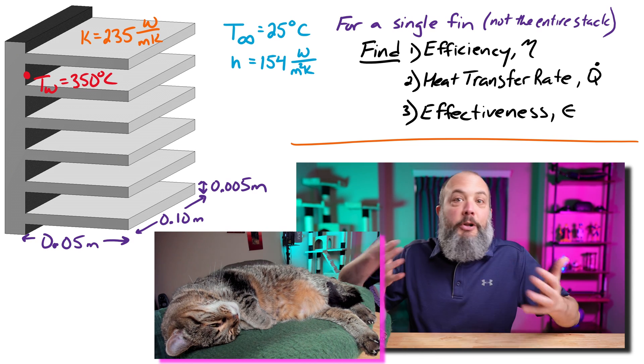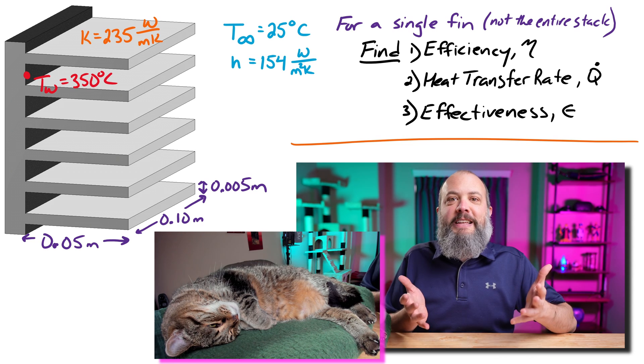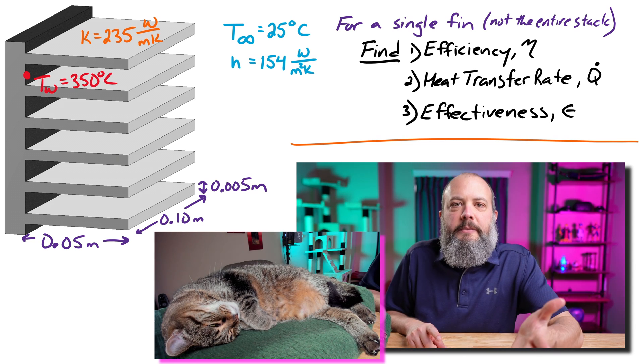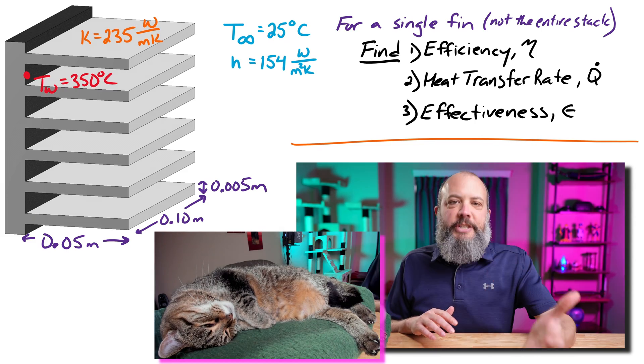My picture here shows a full heat sink composed of many fins, but for this analysis we're going to look at just one fin by itself. And we'll start off by analyzing the fin efficiency.